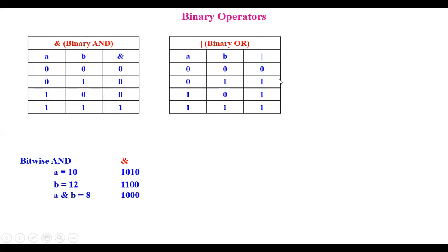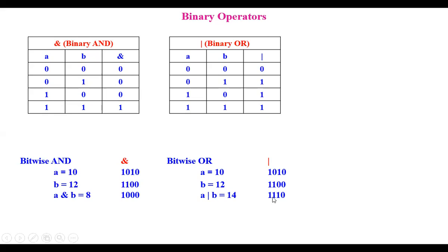The OR operator works like this: when both A and B are 0, result is 0; when either is 1, we get 1; when both are 1, we also get 1. Using the same values A equals 10 (1010) and B equals 12 (1100): 1|1=1, 0|1=1, 1|0=1, 0|0=0 — giving binary 1110, which is 14. So A OR B equals 14.